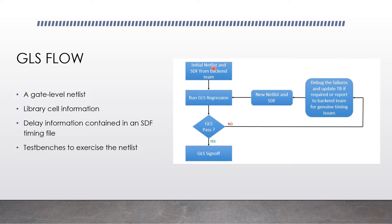Let us understand the gate level simulation flow. You will basically be getting a netlist and an SDF from a backend team. The netlist is the design representation and the SDF is the delay file, which contains the cell delays and the path delays. Once you get these, you need to run a GLS regression. When the GLS regression passes, that is a sign-off saying the product is ready for release.